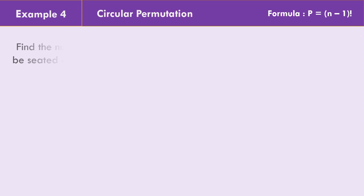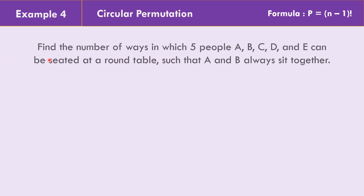In example number 4, find the number of ways in which 5 people — A, B, C, D, and E — can be seated at a round table such that A and B always sit together. Let us look at the different sample arrangements.